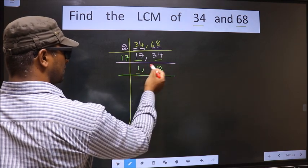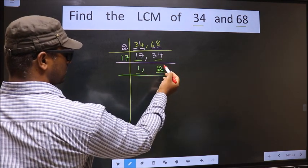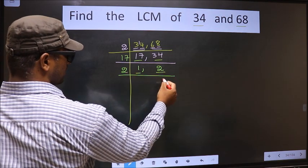Now we got 1 here, so focus on the other number, that is 2. 2 is a prime number, so 2, 1 is 2.